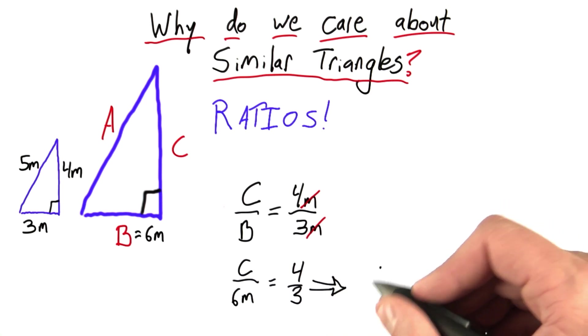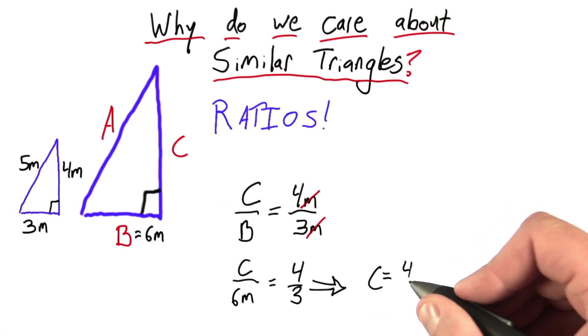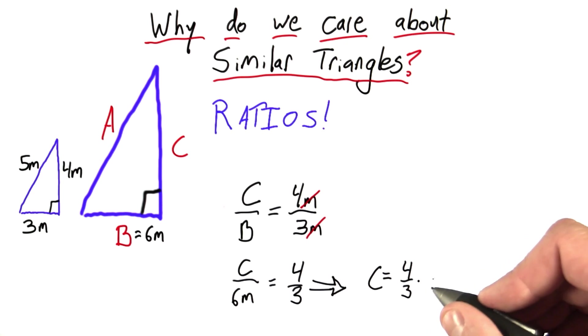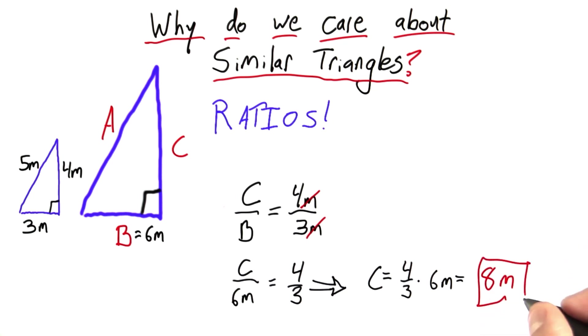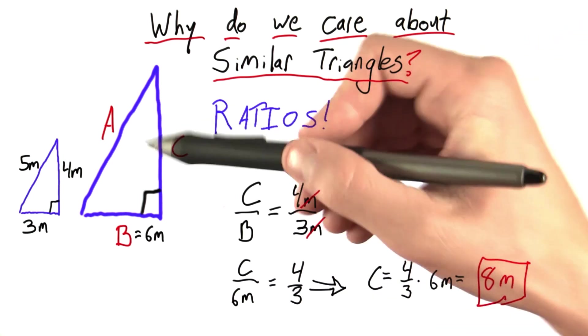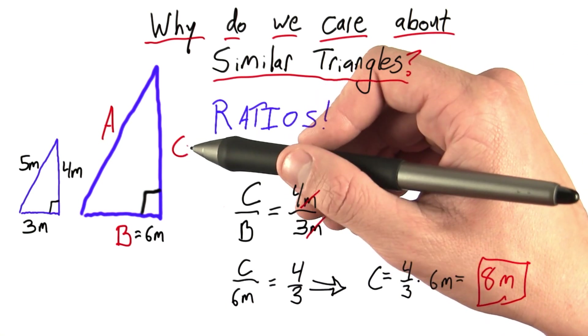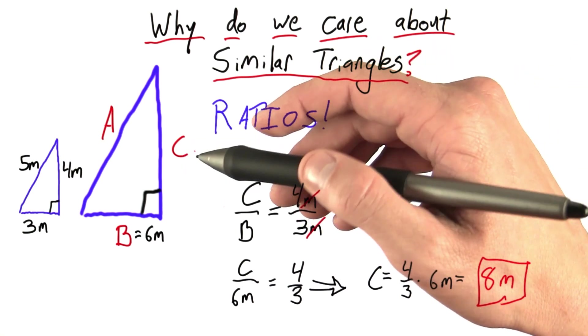And that gives me the following. C equals 4 over 3 times 6 meters, also known as 8 meters. Okay, that wasn't so bad. We used the power of ratios to calculate an unknown side of a triangle. And this is a huge tool to have at our disposal.